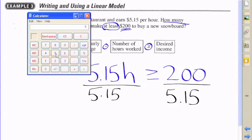Let's see what happens. You take the $200 and divide it by $5.15, and we get 38 and change.